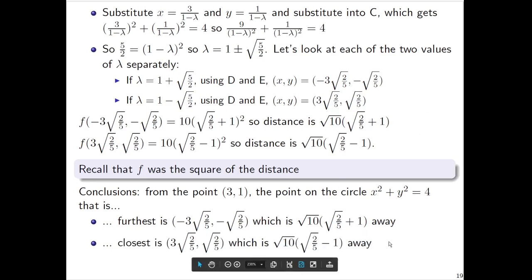With the minus sign, this is going to be a smaller number. So that's the closest point. We get the furthest and closest point.